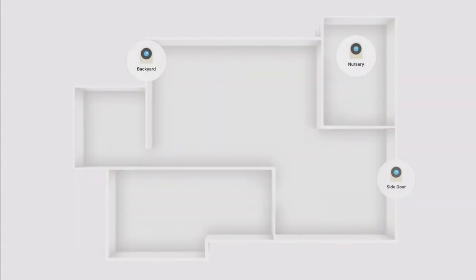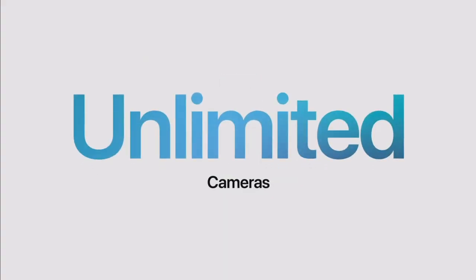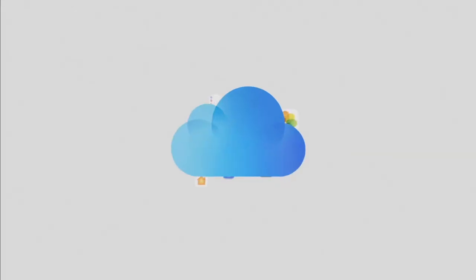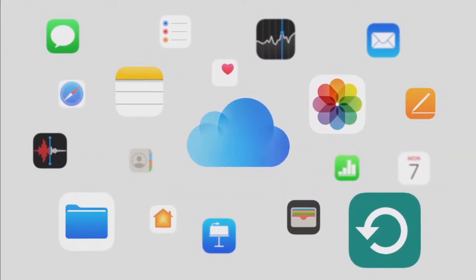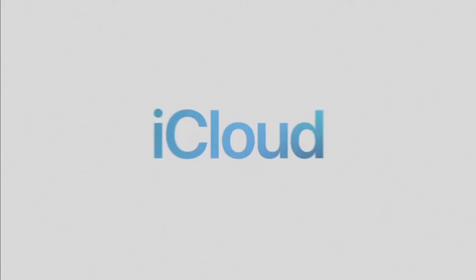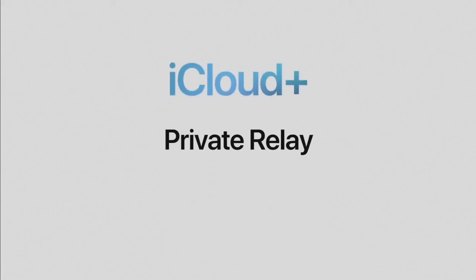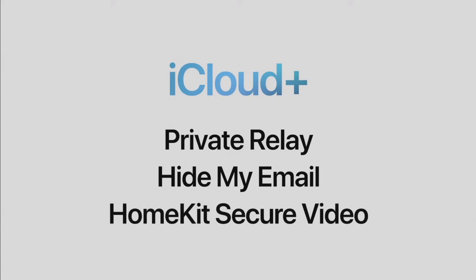With iCloud Plus, you can also connect more HomeKit security cameras than ever, and none of the video counts against your iCloud storage — it's just part of your subscription. You'll still get everything else you love about iCloud, including photos, backup, and iCloud Drive. And the best part: Apple is not changing its prices at all. You'll get all of iCloud plus Private Relay, Hide My Email, and expanded HomeKit Secure Video support.